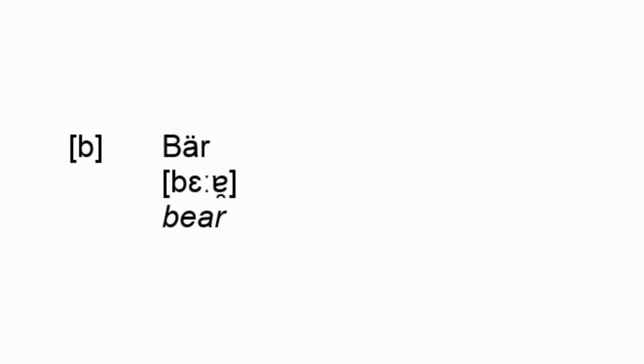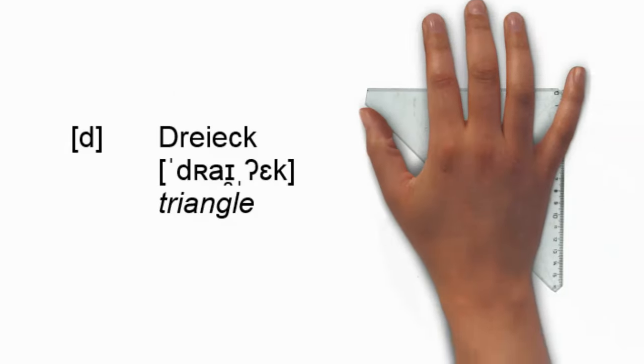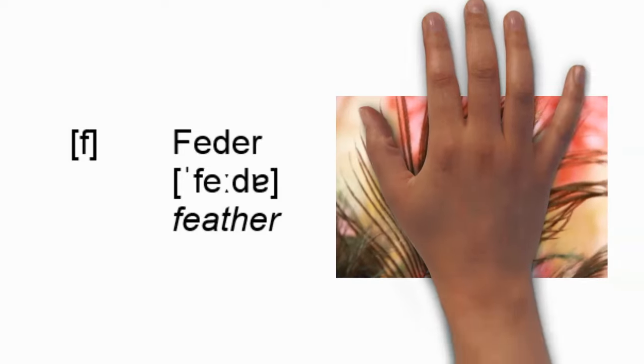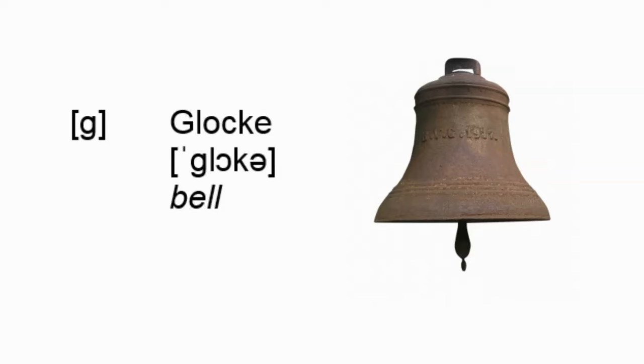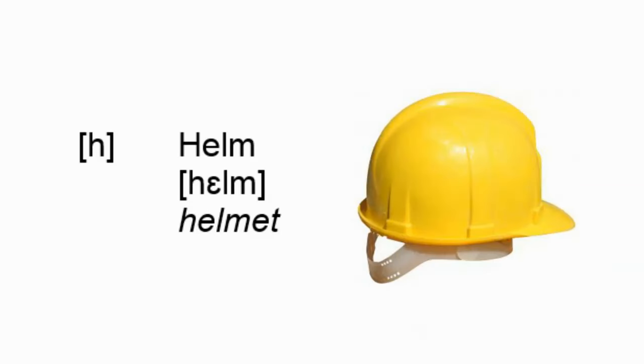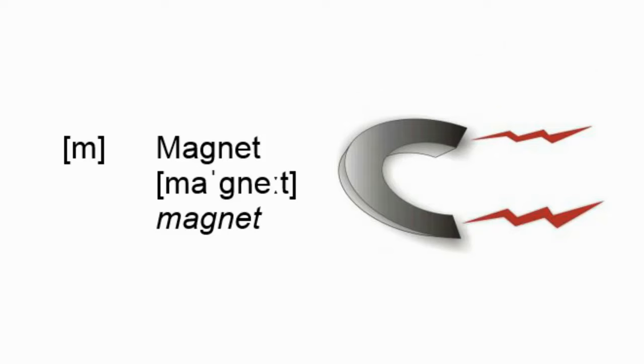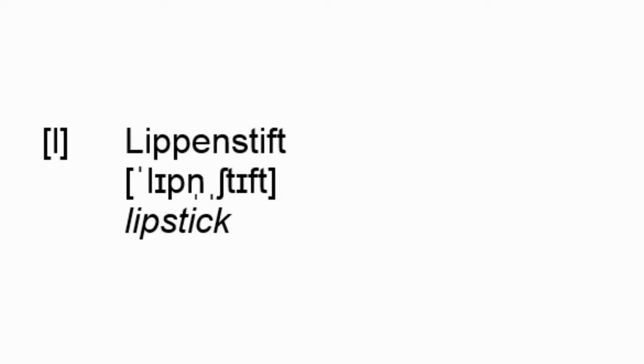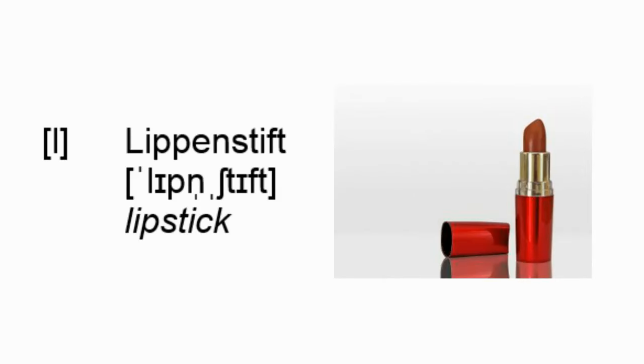German has B as in Bär, D as in Dreieck, F as in Feder, G as in Glocke, H as in Helm, K as in Kamin, M as in Magnet, N as in Nagel, P as in Papagei, S as in Kasse, T as in Tulpe, W as in Vase, and Z as in Socke. We'll add one more symbol to this mix, which is German's L as in Lippenstift. It's a familiar symbol in IPA — a lowercase L.